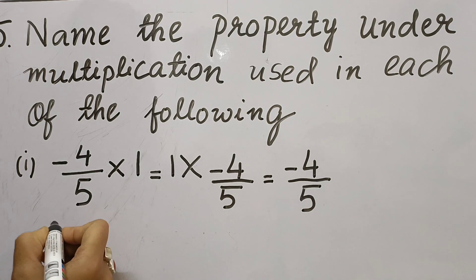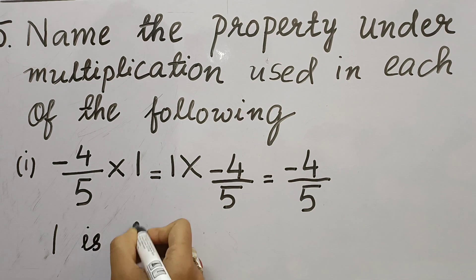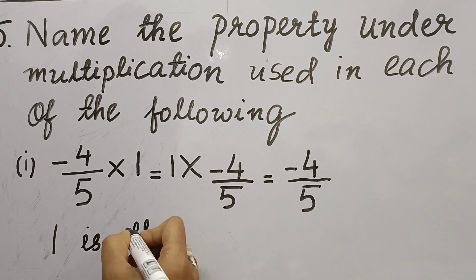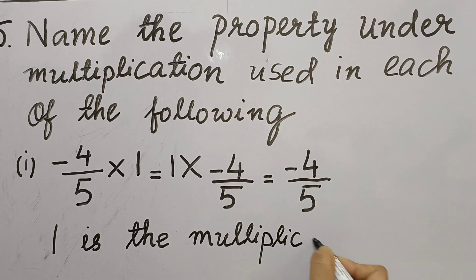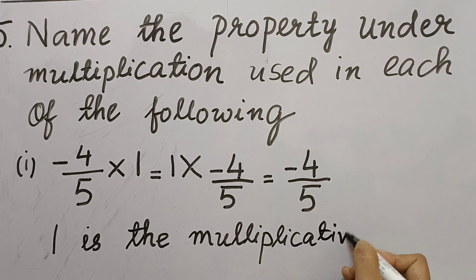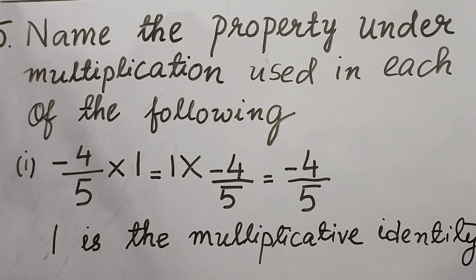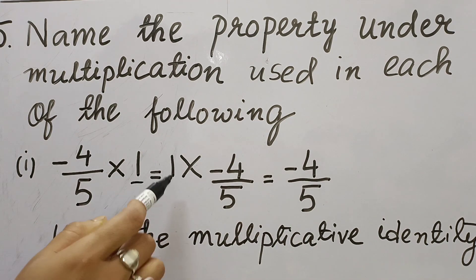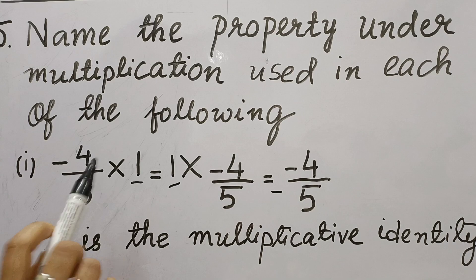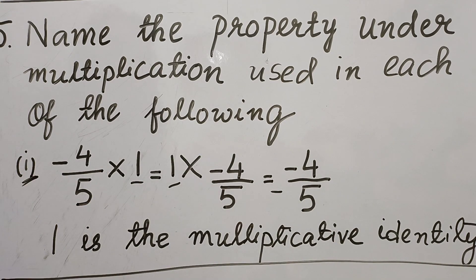So we write: 1 is the multiplicative identity, because whether we place 1 on either side of (-4/5), the answer remains the same — (-4/5). So 1 is the multiplicative identity for Question 5, Part 1.